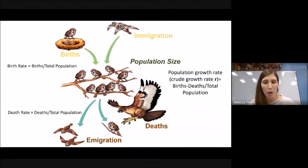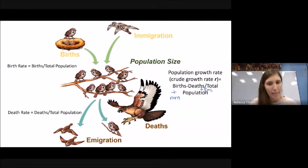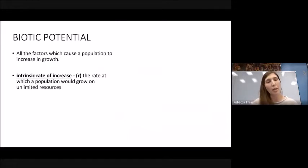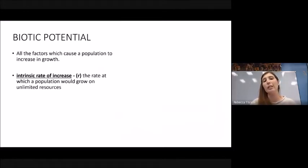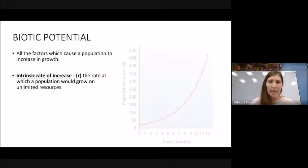We also refer to R as the biotic potential of a population — all the factors which cause a population to increase in growth, also called the intrinsic rate of increase. Think of it as the maximum rate of growth a population could sustain with unlimited resources in a perfect environment. On a graph, this produces an exponential curve — plenty of resources, plenty of space, no limiting factors.